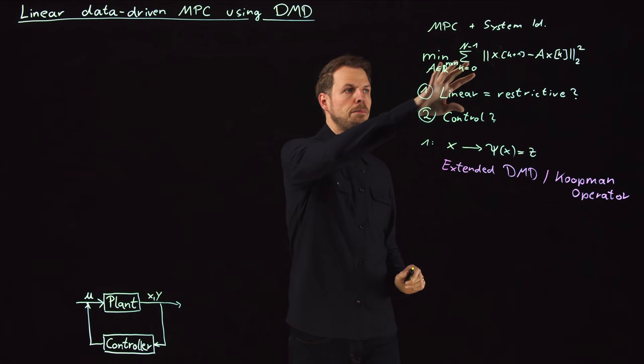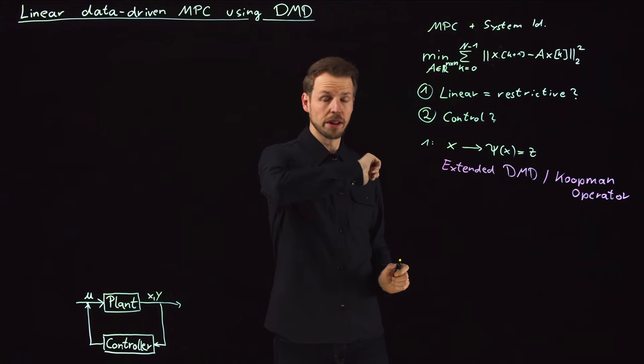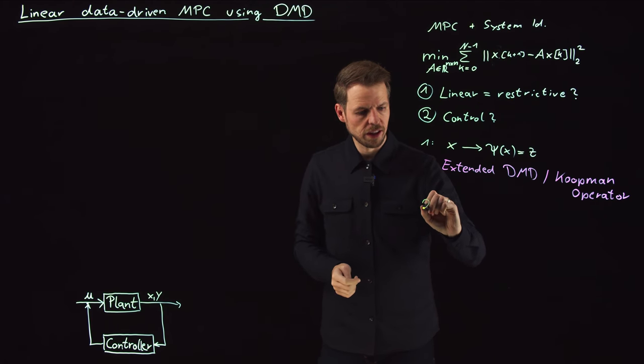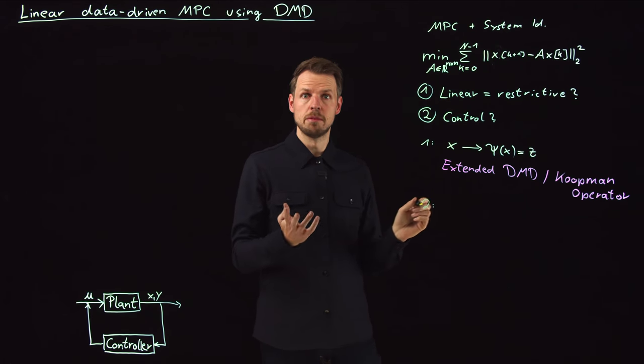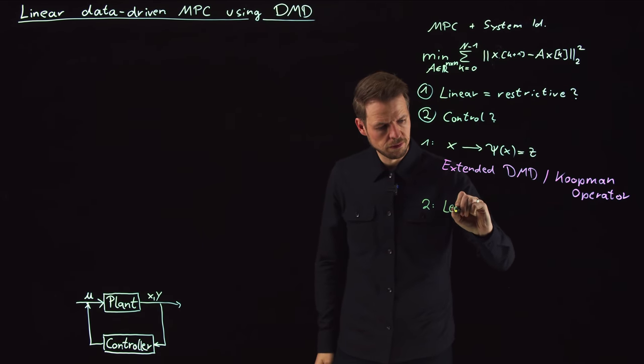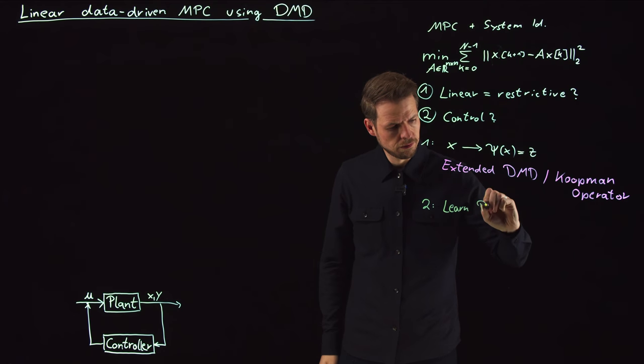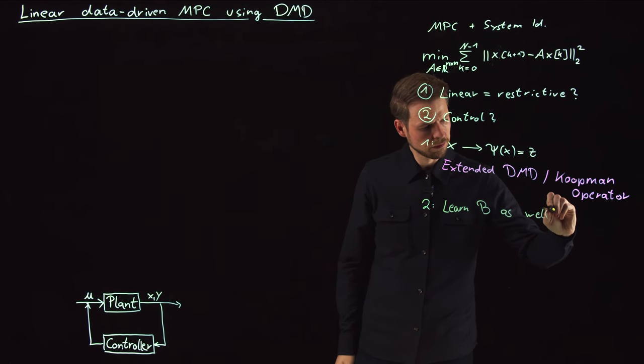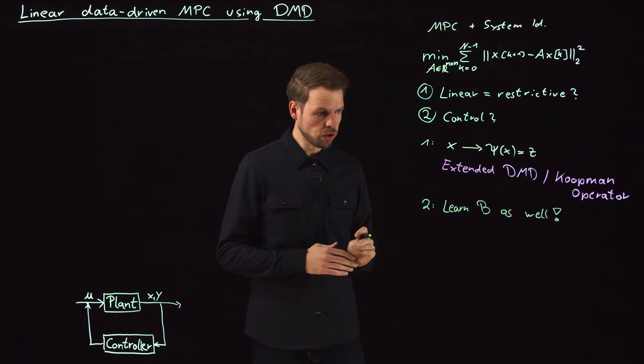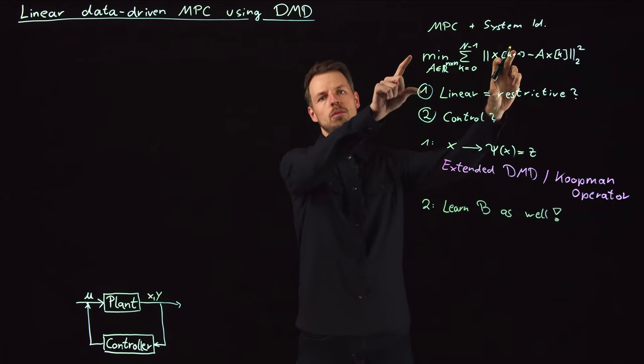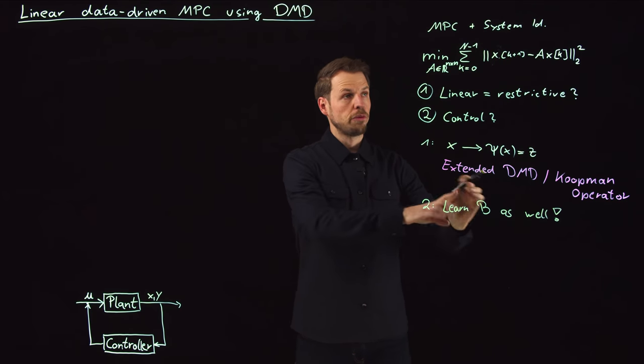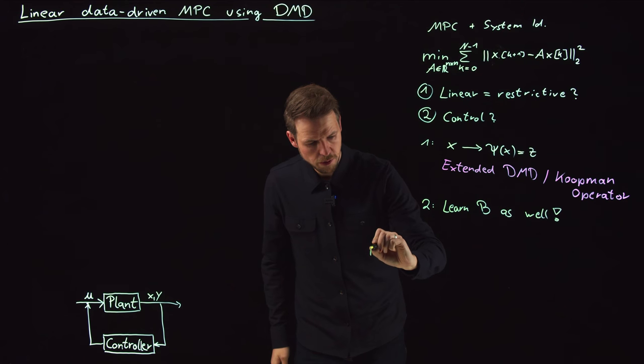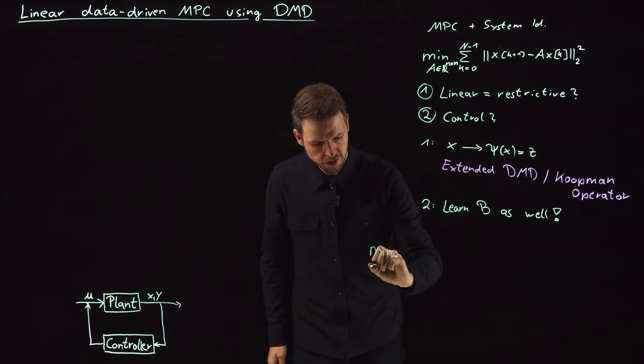And so what about point two? And here we can use a very simple trick. What I'm going to say is simply learn the B matrix as well. It's just that simple.